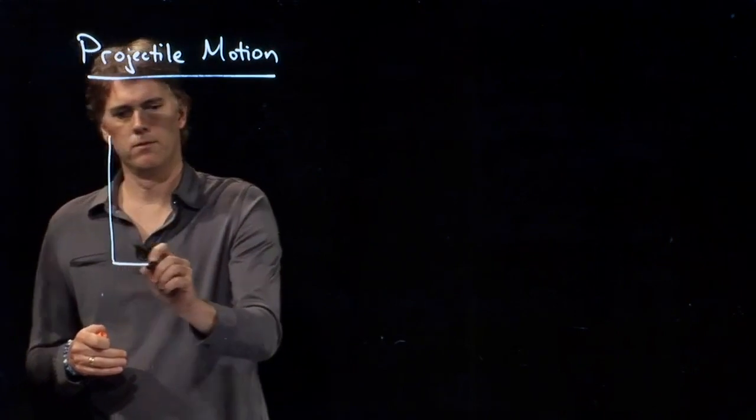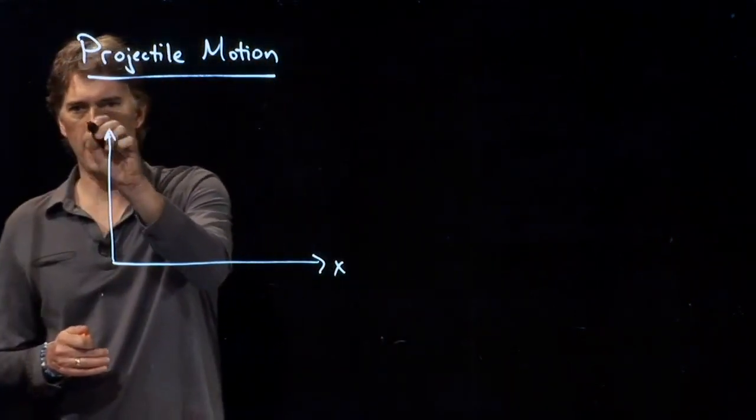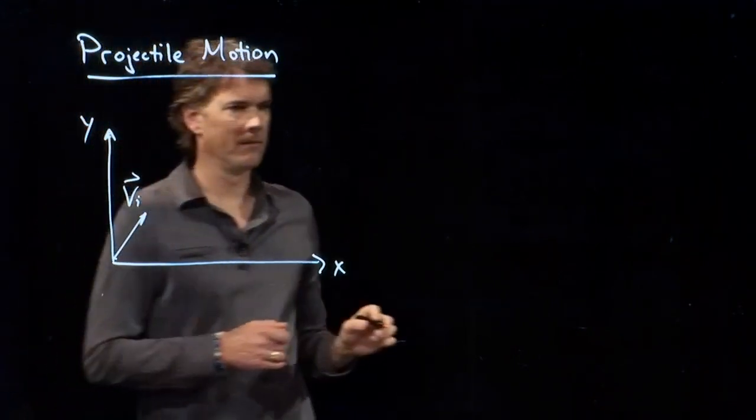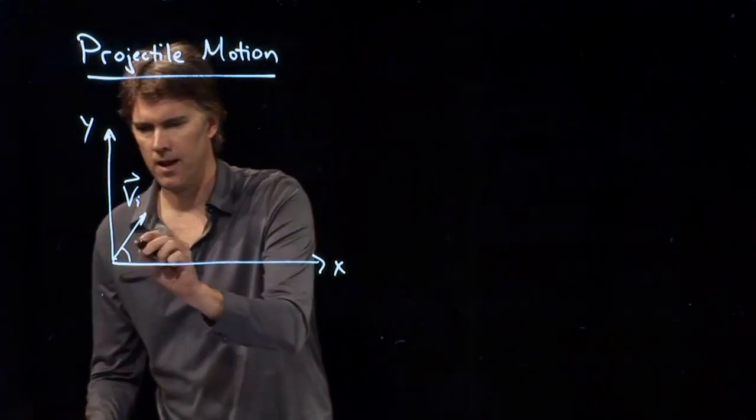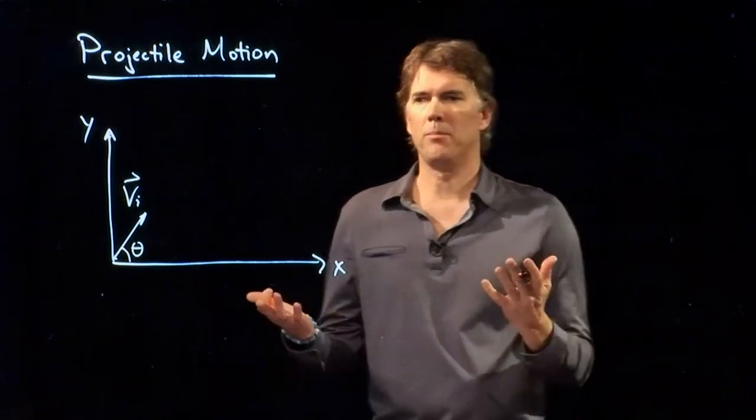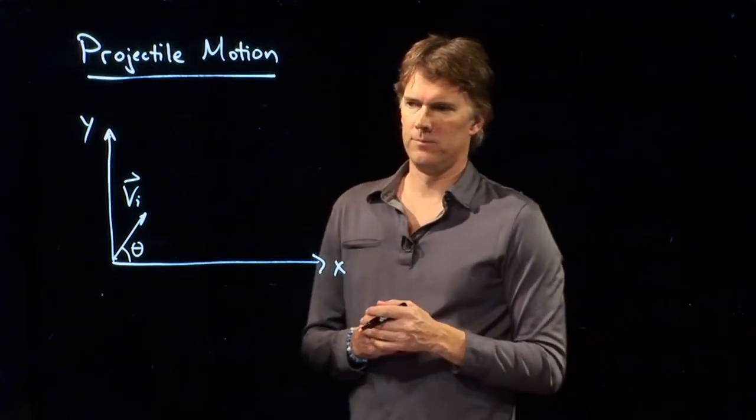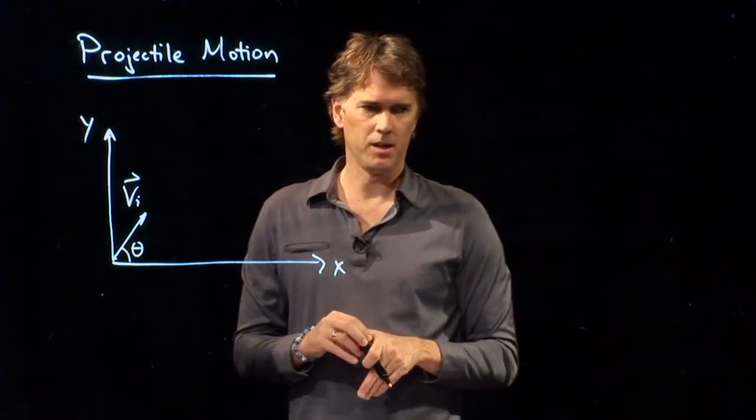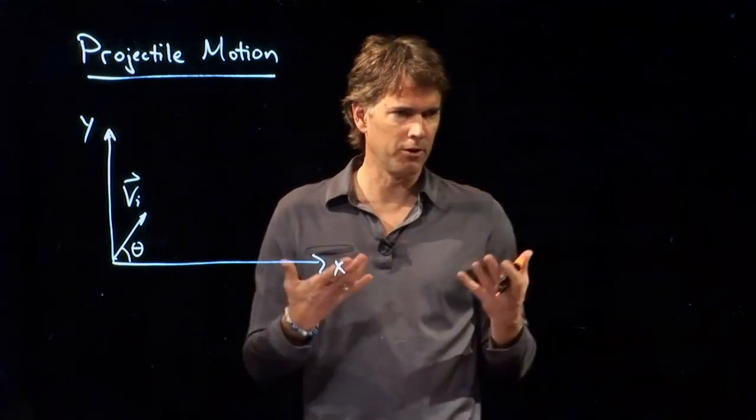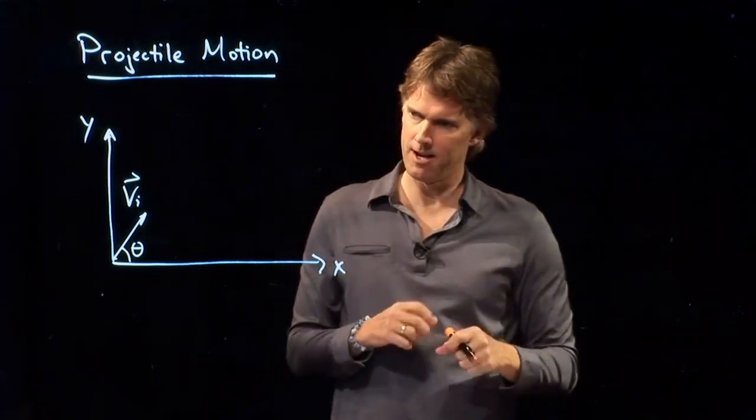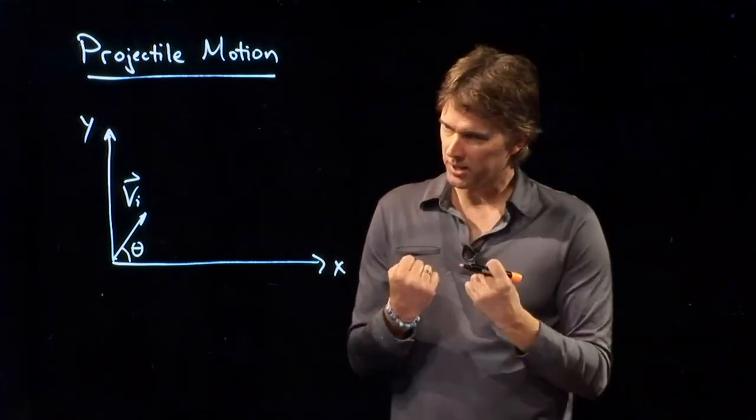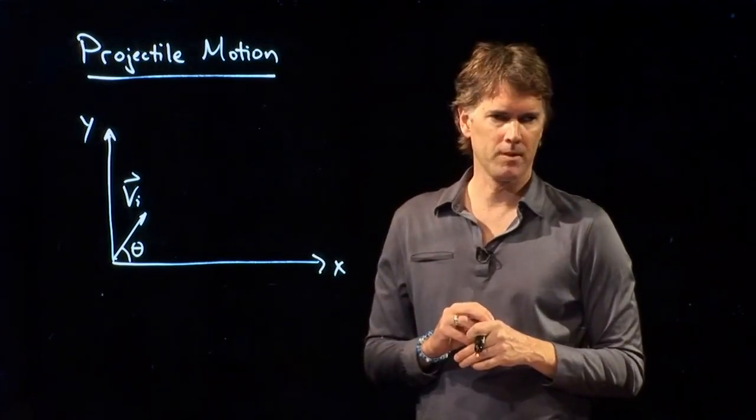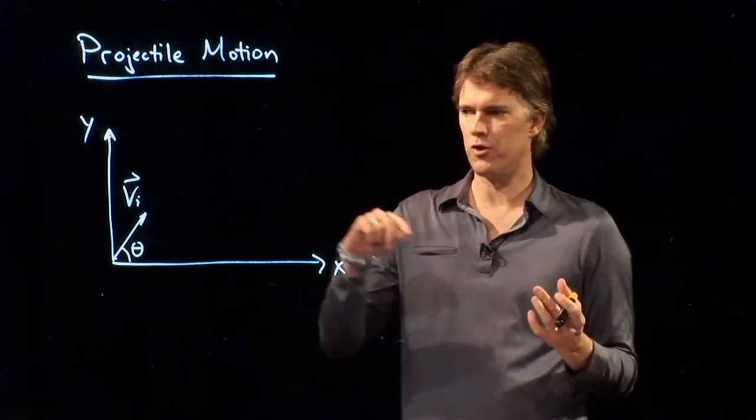So projectile motion looks like this. If I draw an XY coordinate system and I launch an object at some initial velocity and some initial angle theta, what happens to that object? Does it keep going up forever? No, because there's this giant thing underneath us called the Earth that tends to pull everything down. It eventually comes back to Earth, of course.